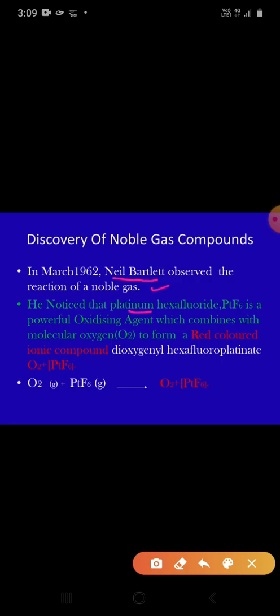He noticed that platinum hexafluoride, the formula is PtF6. PtF6 is a powerful oxidizing agent which combined with molecular oxygen O2 to form a red colored compound which is ionic and the compound is dioxygenyl hexafluoroplatinate O2+ PtF6- and the chemical reaction can be written as O2 gas plus PtF6 gas gives rise to O2+ PtF6-.